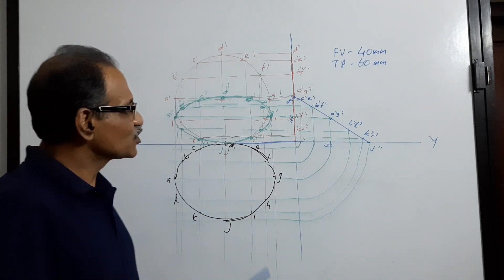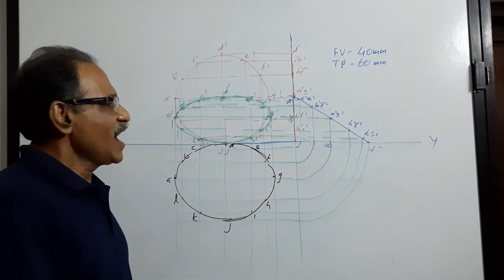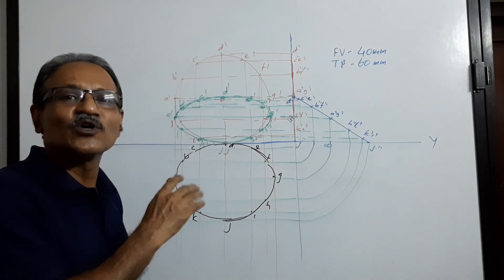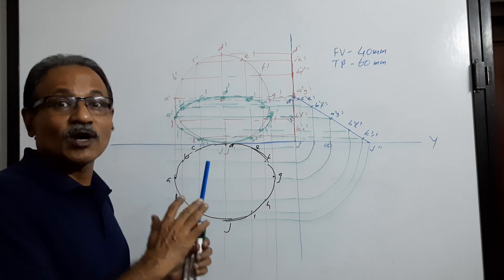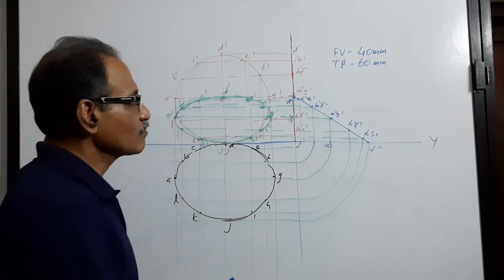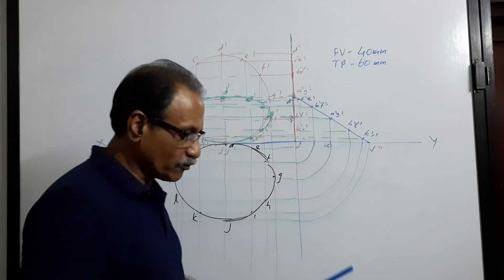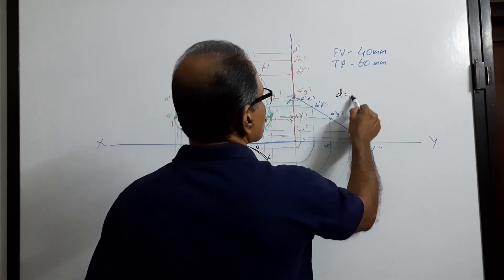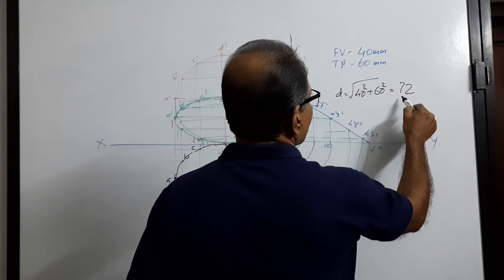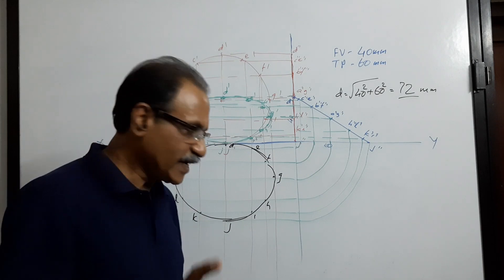The minor axis is 16 mm, so this method is a shortcut. I don't advise you to go for this method — even though it is a shortcut, it's better to avoid it. Instead, if this is 40 and this is 60, the diameter D equals the square root of 40 squared plus 60 squared, which gives approximately 72 mm.